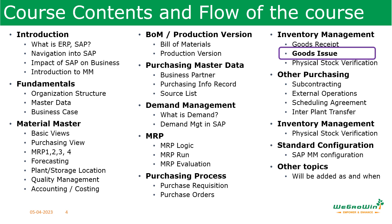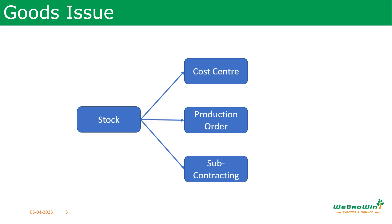When goods issue is done, the amount of stock in the plant, warehouse, or store location is reduced. This happens because of various scenarios: when material is shipped to the customer, when material is withdrawn from stock for a production order, a transfer of material from one plant or store location to another, or material required for sampling or scrap. We will discuss some of these scenarios in this session, including goods issue to cost center, production order, and subcontracting.